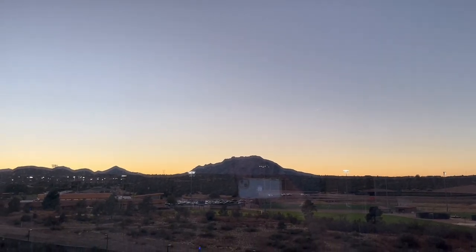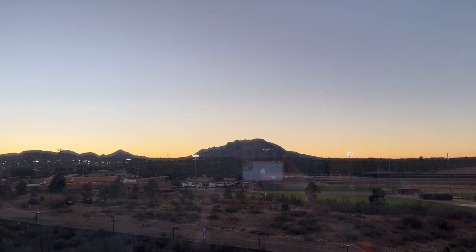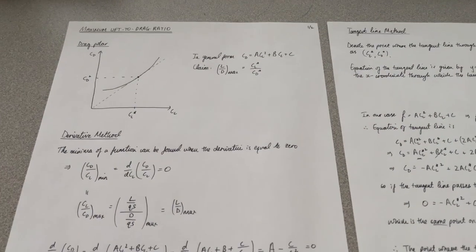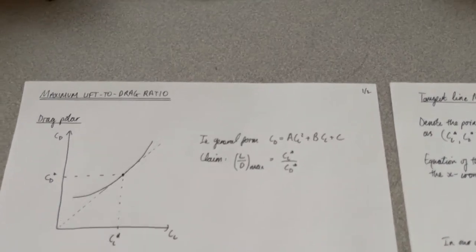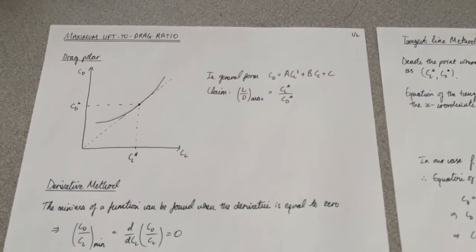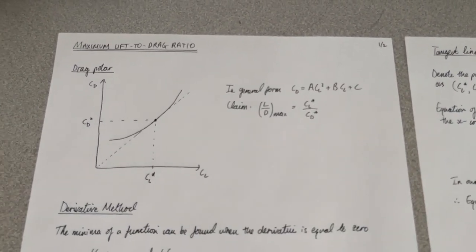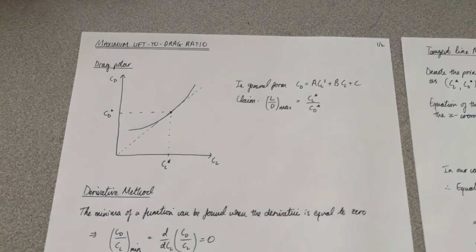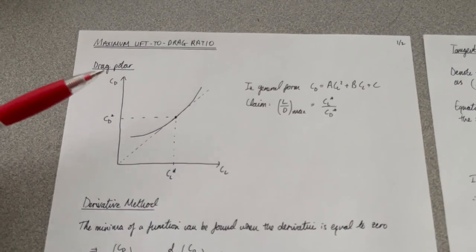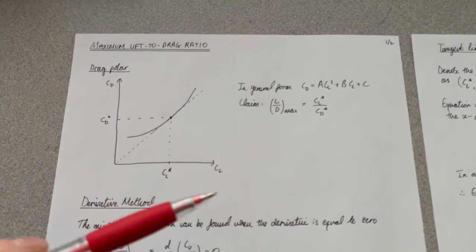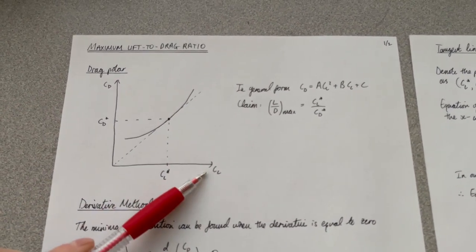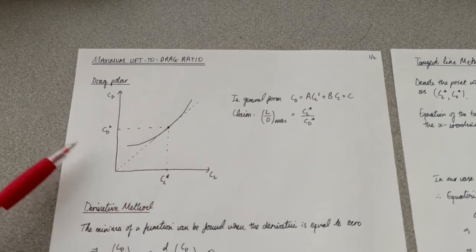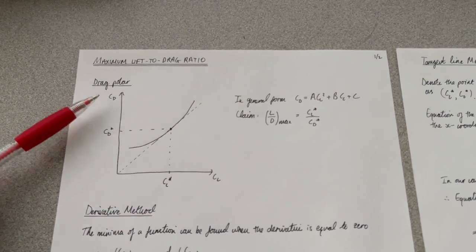Good afternoon everyone. Because I had a couple of questions about how to calculate the lift-to-drag ratio from a drag polar, I just wanted to clarify a couple of things here with a couple of different methods. Here's our drag polar — lift coefficient on the x-axis versus drag coefficient on the y-axis.